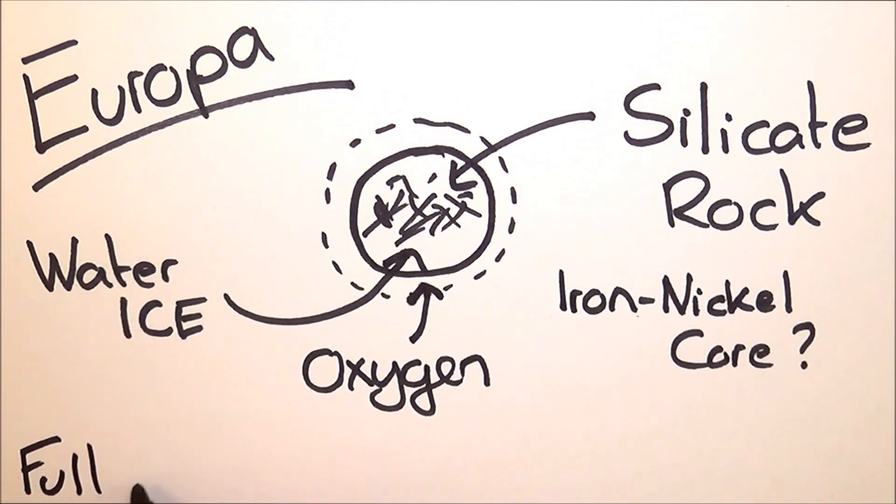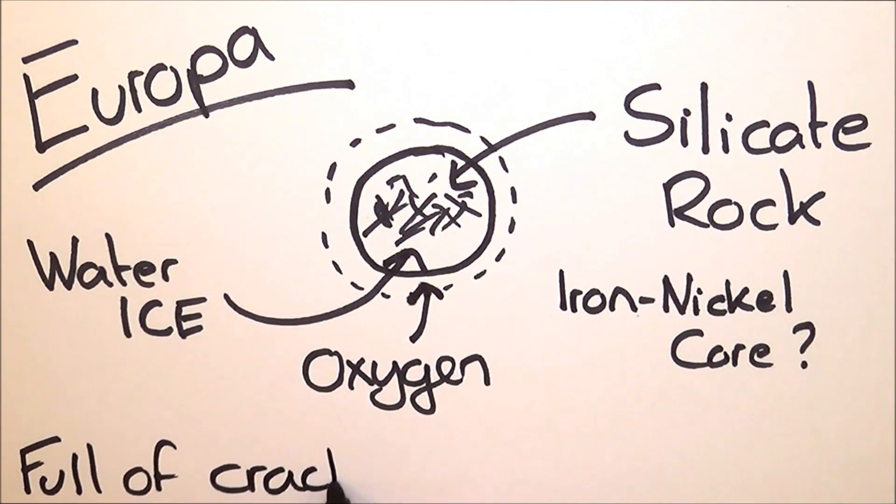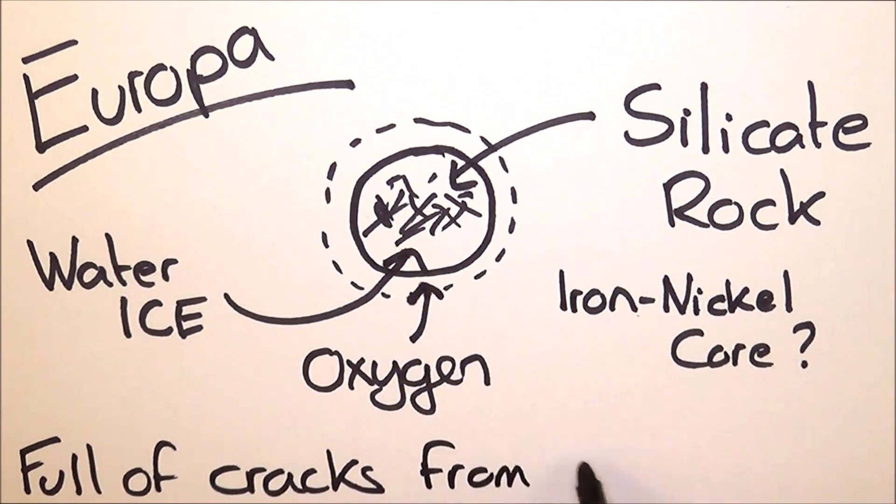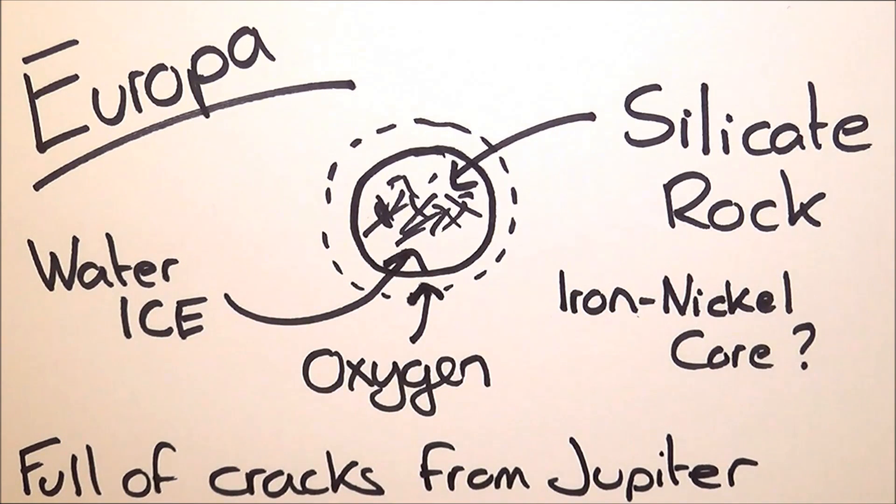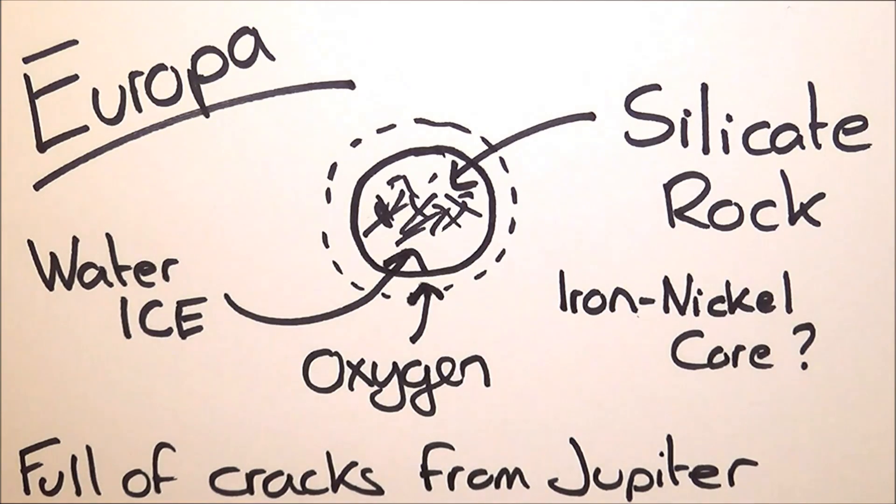But as Europa is Jupiter's fourth-largest moon, it gets pushed and pulled around by Jupiter and the other moons. These cause it to expand and contract, which heats it up, meaning that some of the water-ice crust could melt.